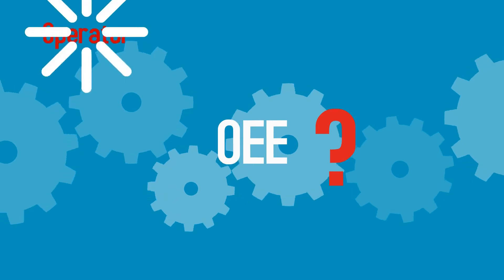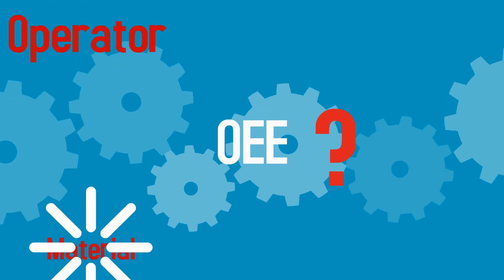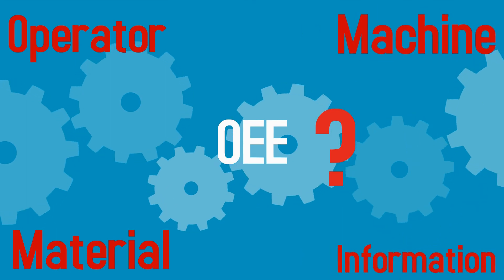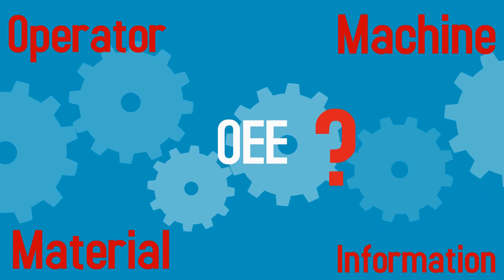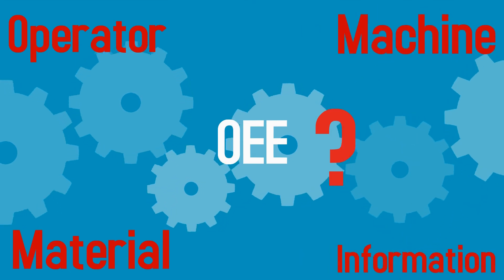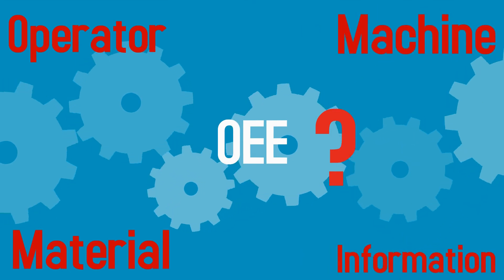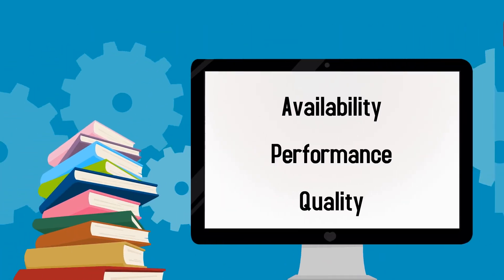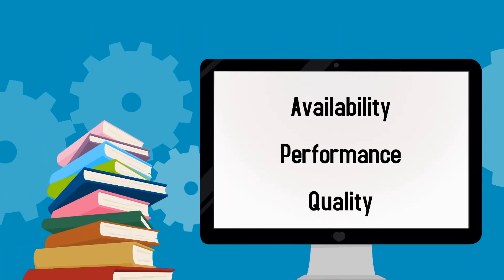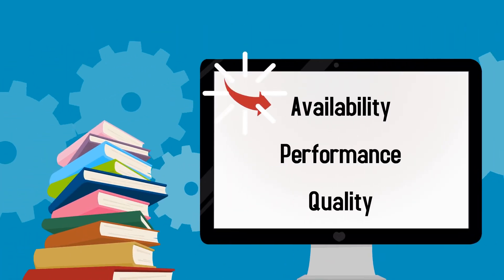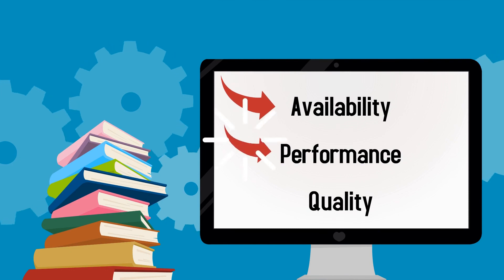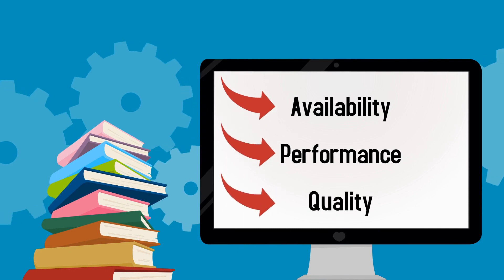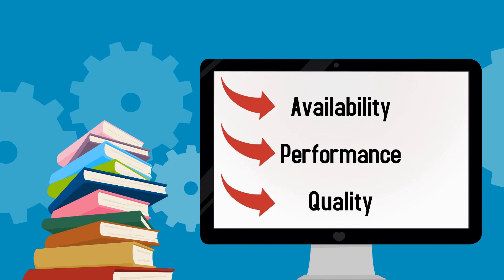The four sources of deviations that impact overall equipment effectiveness are operator, machine, material, and information. To learn more about OEE and the four types of deviations, be sure to watch the availability, performance, and quality videos.